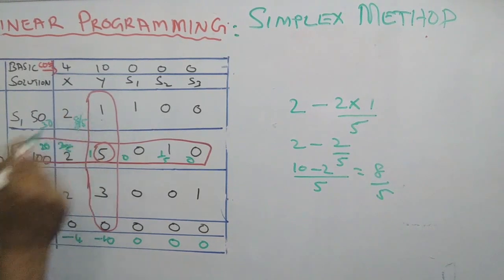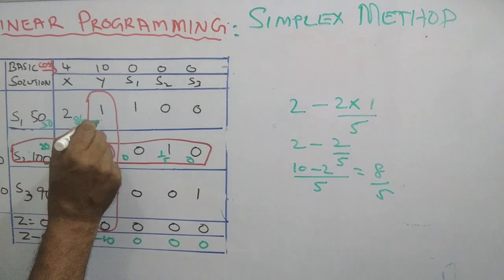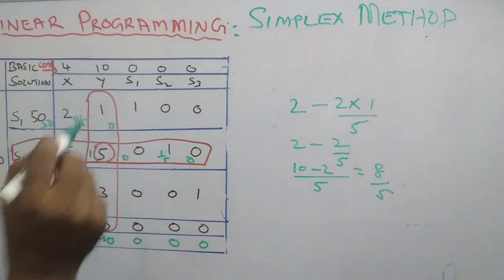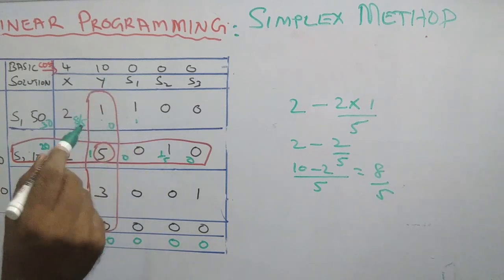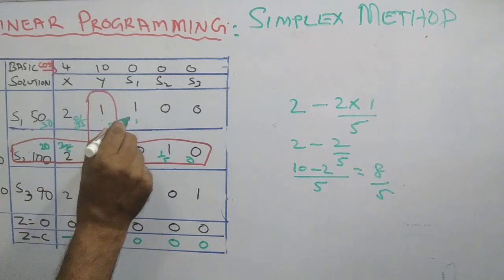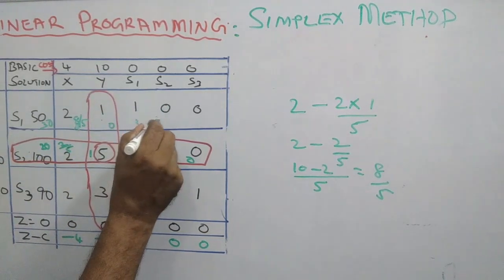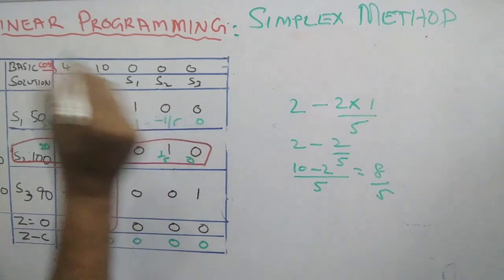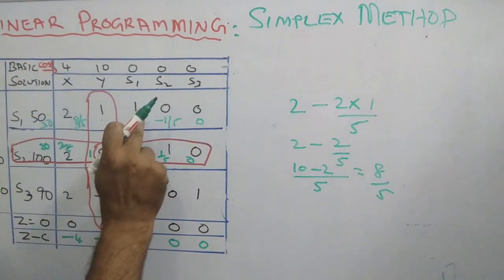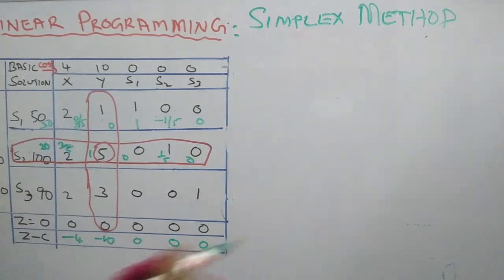Similarly, we compute all the numbers. This becomes 0, this becomes 1, this becomes minus 1 by 5, and this becomes 0. Please compute all the numbers using the formula.